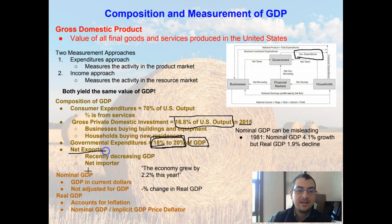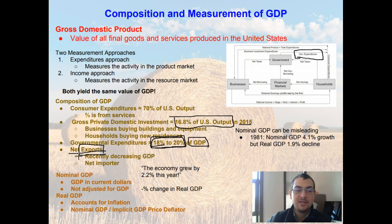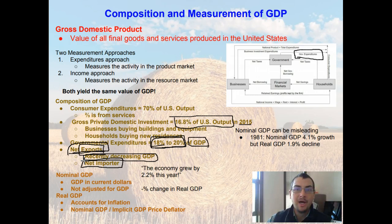Another component is net exports. If we are a net exporter — selling more final goods and services to other countries than we are buying — that actually increases our GDP. But in reality, the United States has been a net importer in recent years, meaning we buy more goods and services from other countries than we sell. Being a net importer actually decreases our GDP.